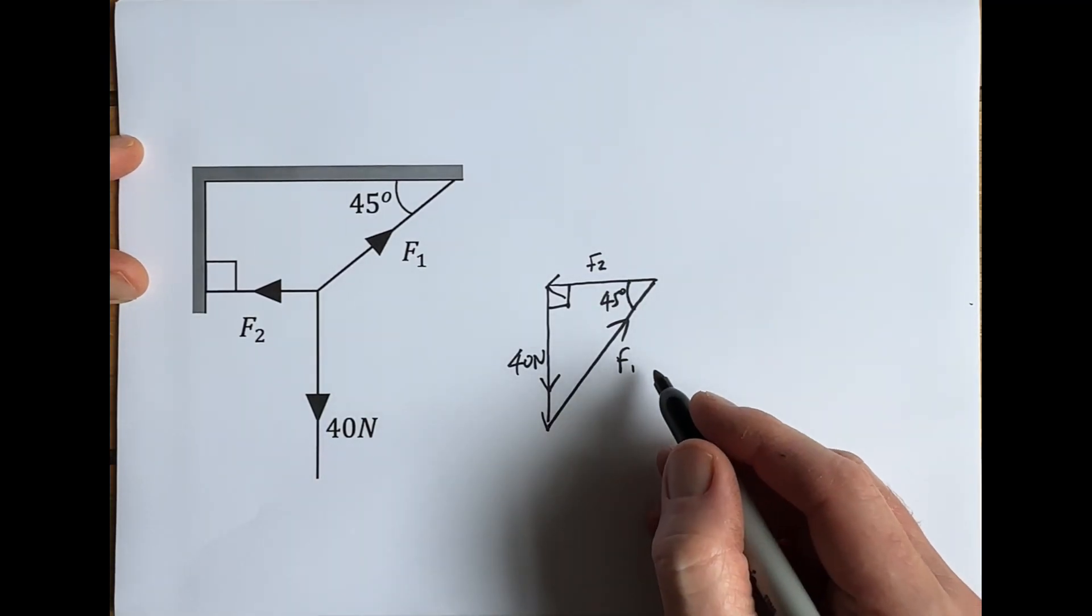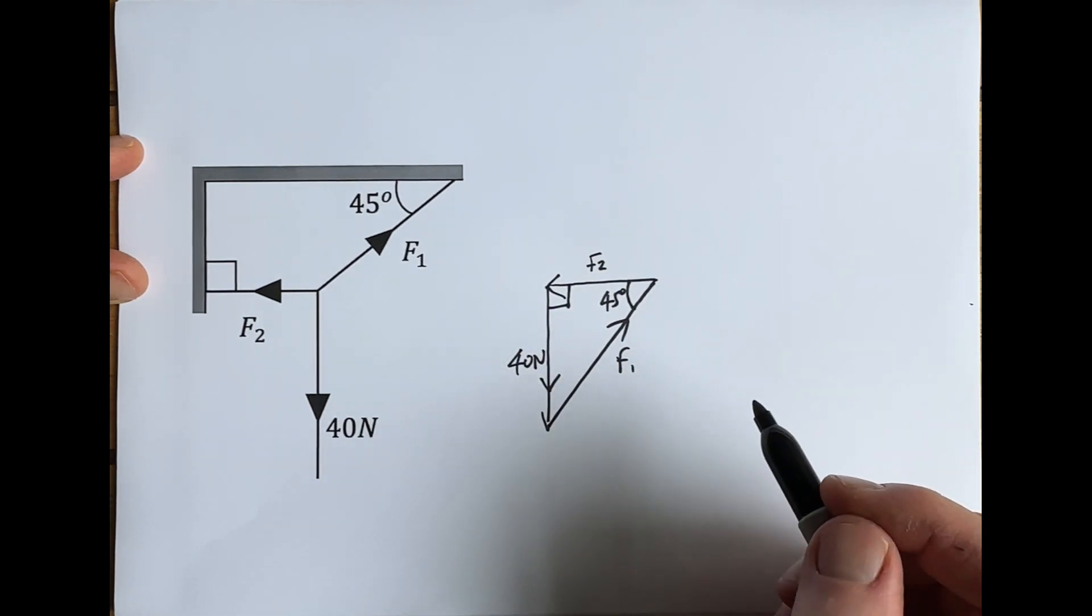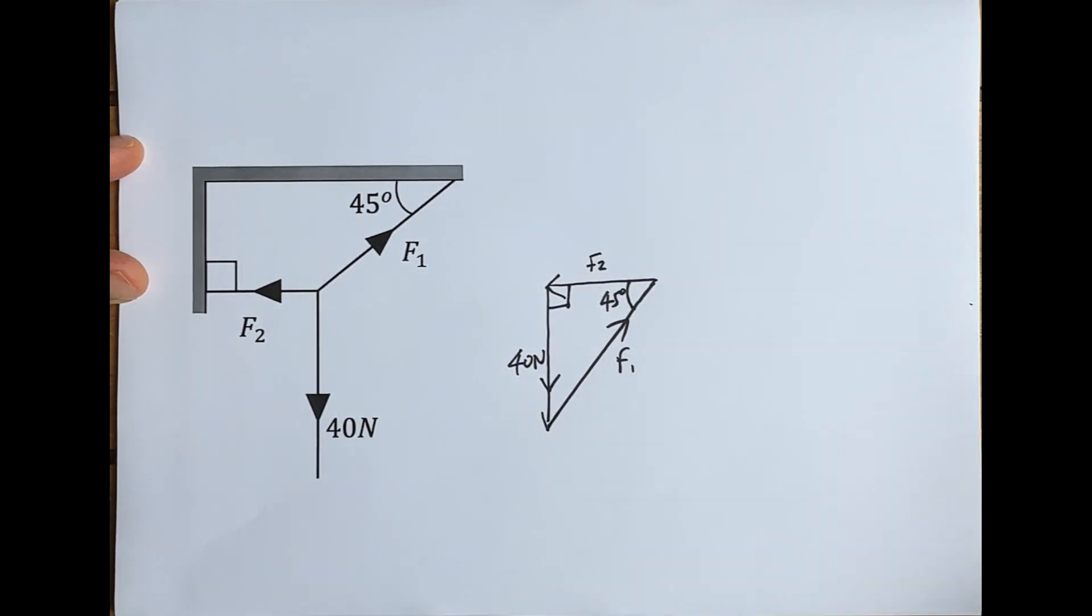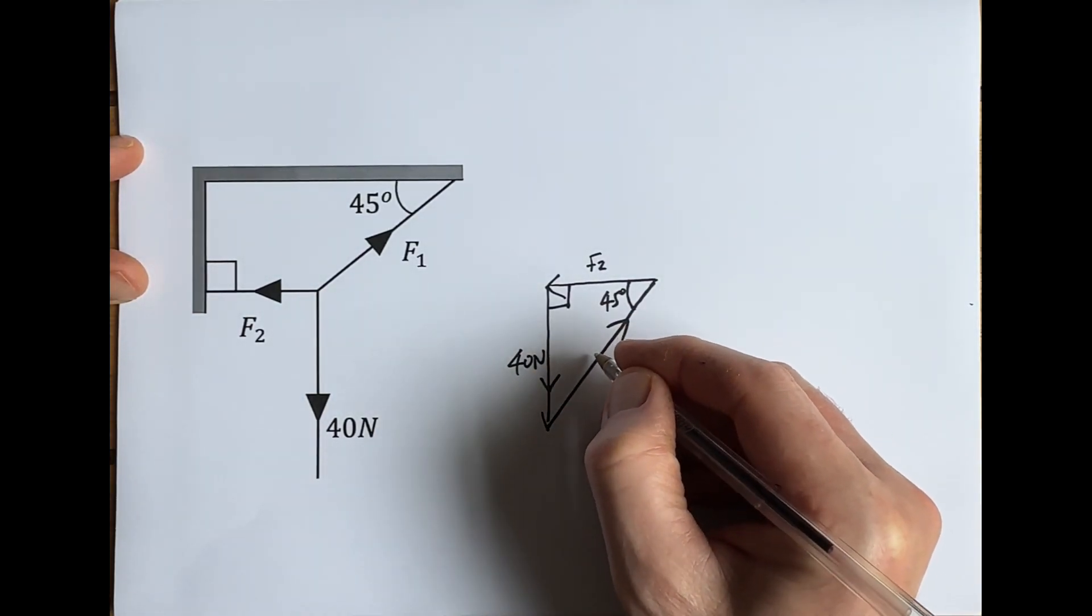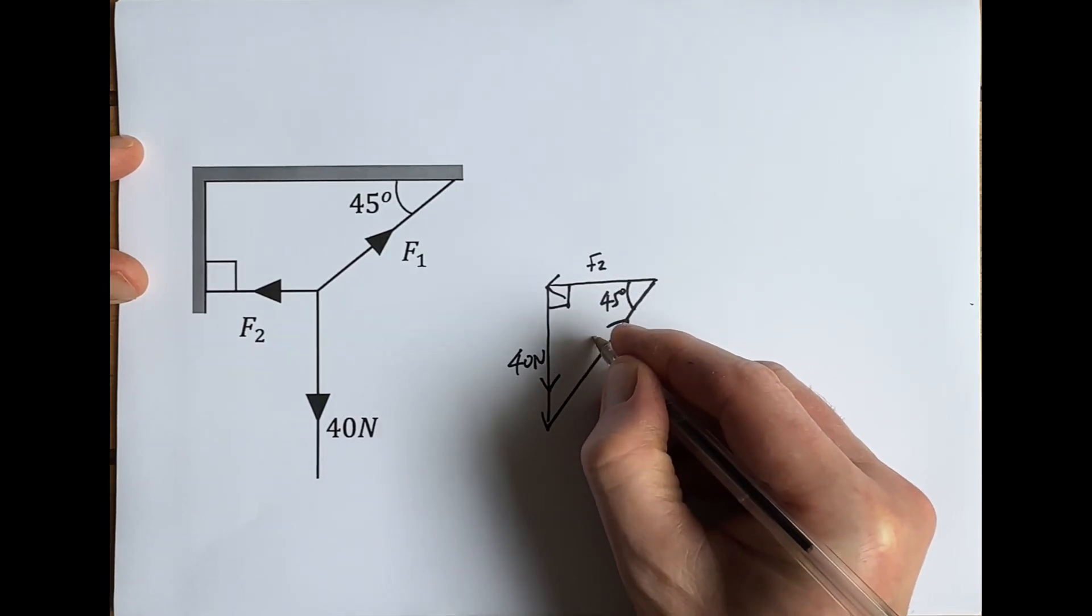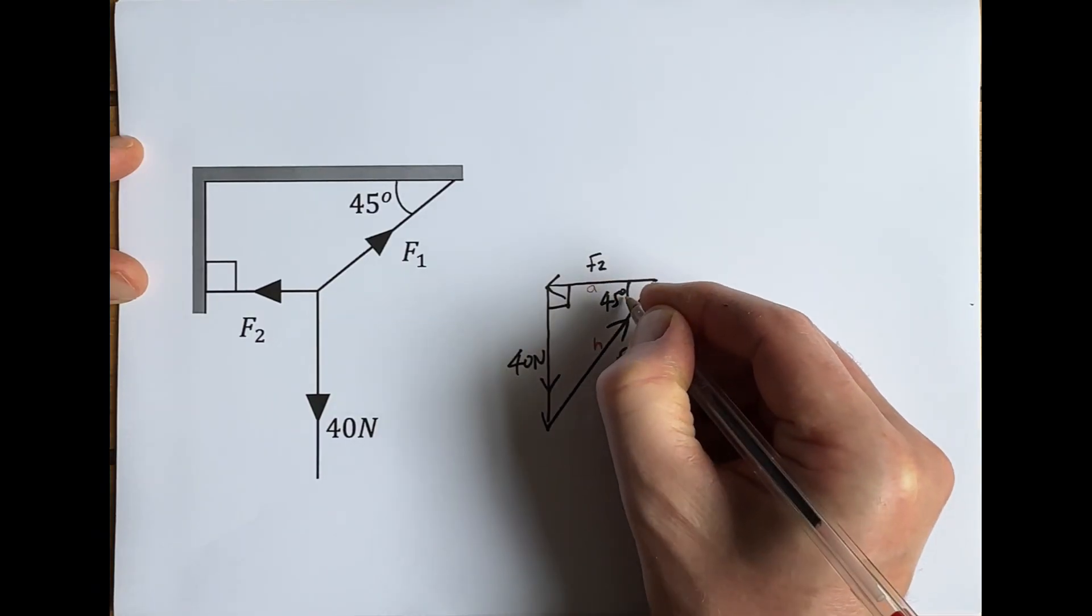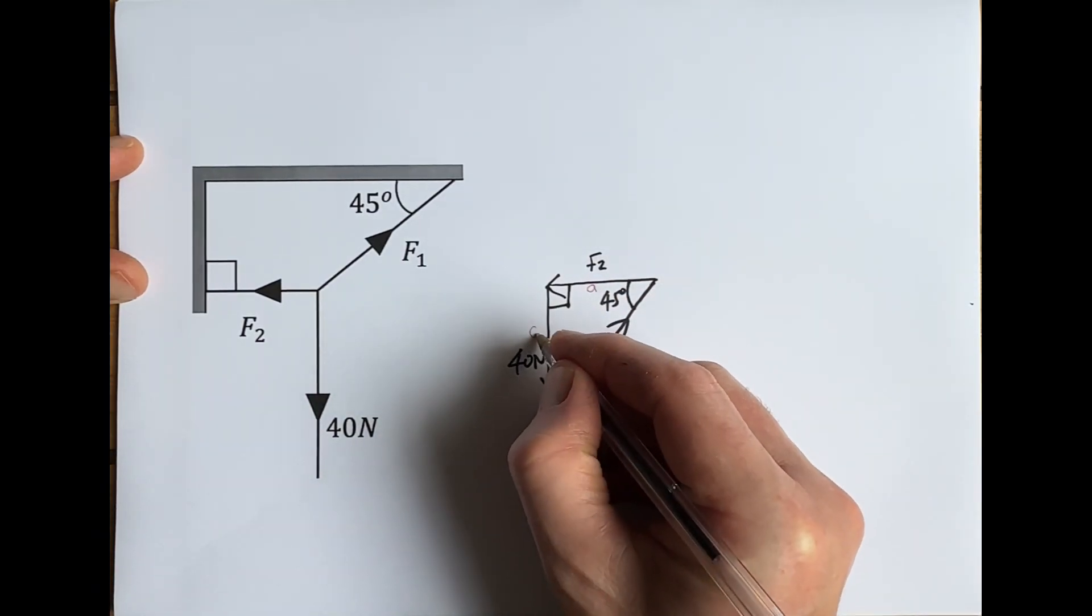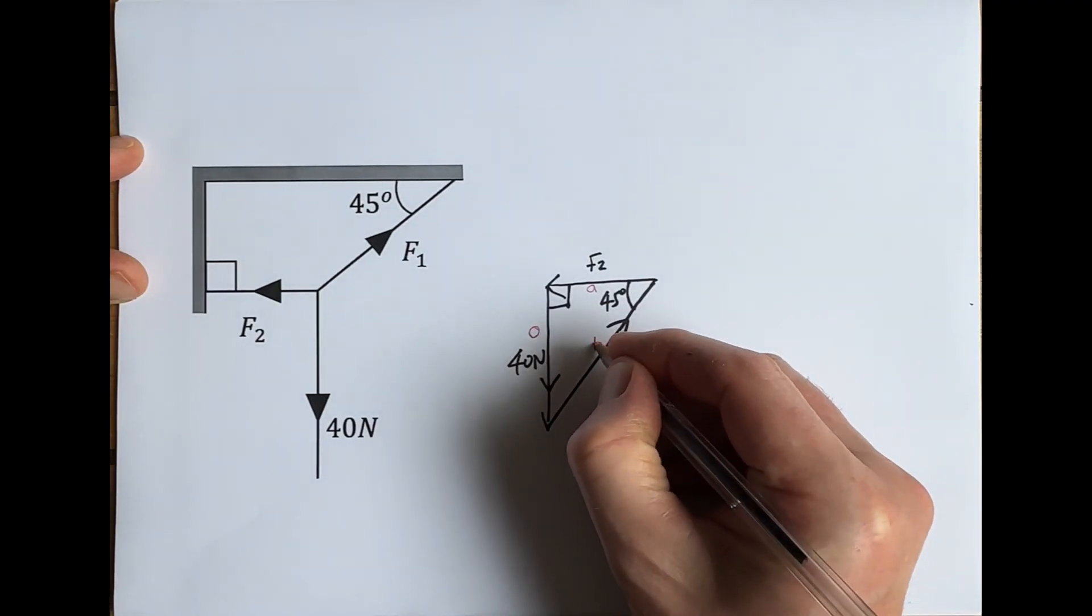Now we're going to try and work out F1 and F2, and the way we can do this is we're just going to use trigonometry. If we look at this triangle, you'll remember from your GCSE trigonometry studies—this is the hypotenuse of this right angle triangle, this is the adjacent to the 45 degree angle, and this is opposite to the 45 degree angle.